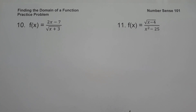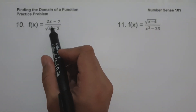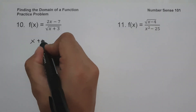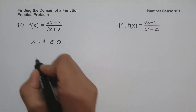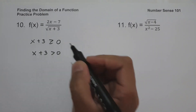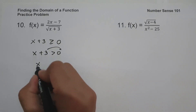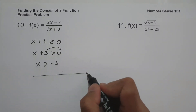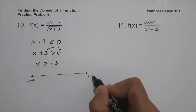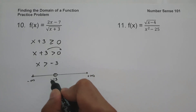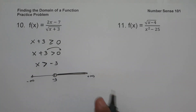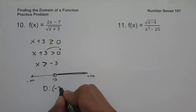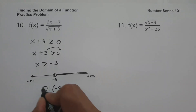On example number ten, f of x is equal to 2x minus 7 all over the square root of x plus 3. If the square root were in the numerator we would set x plus 3 ≥ 0, but since it is in the denominator we set x plus 3 > 0, so x > negative 3. We use an open circle for negative 3 on the number line, and the domain is from negative 3 to positive infinity.